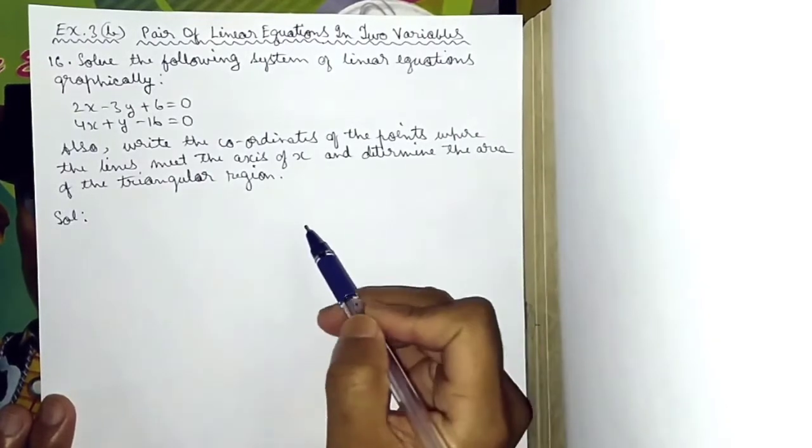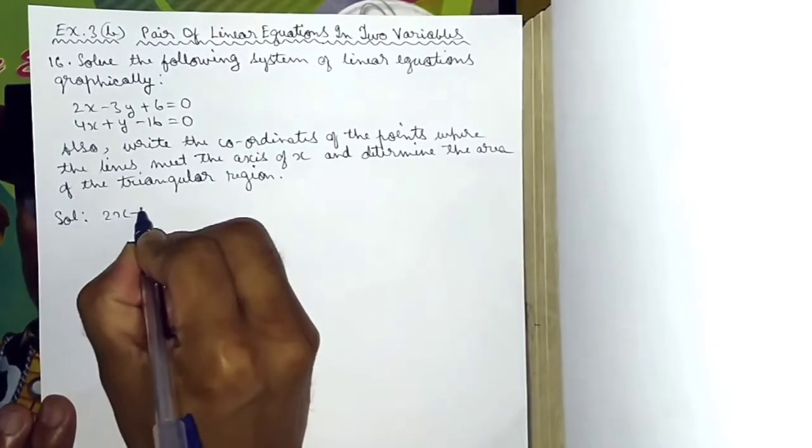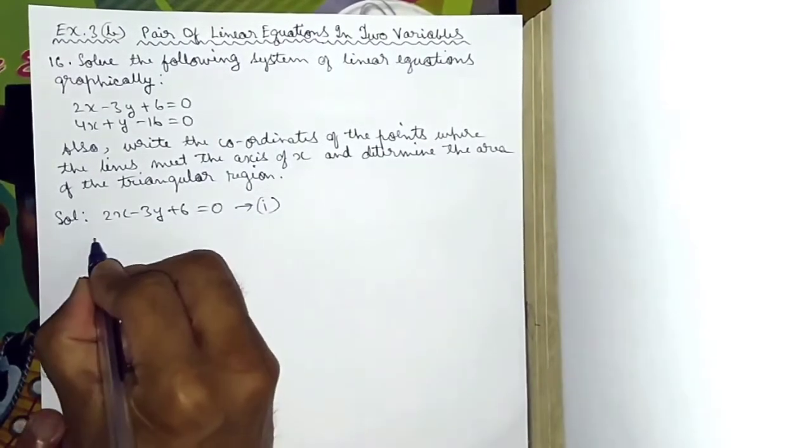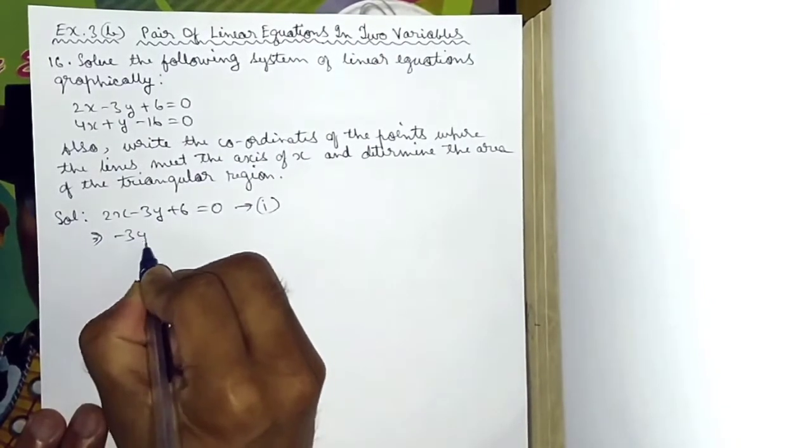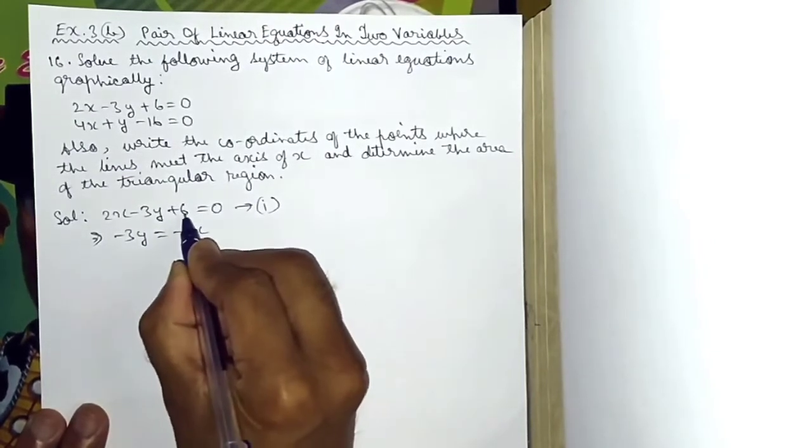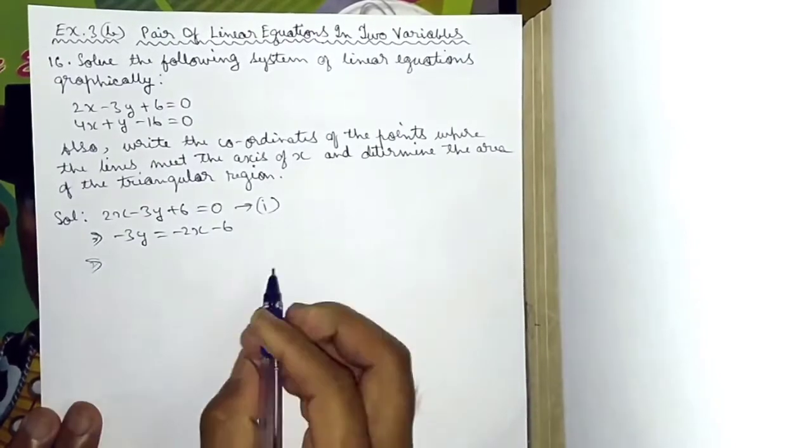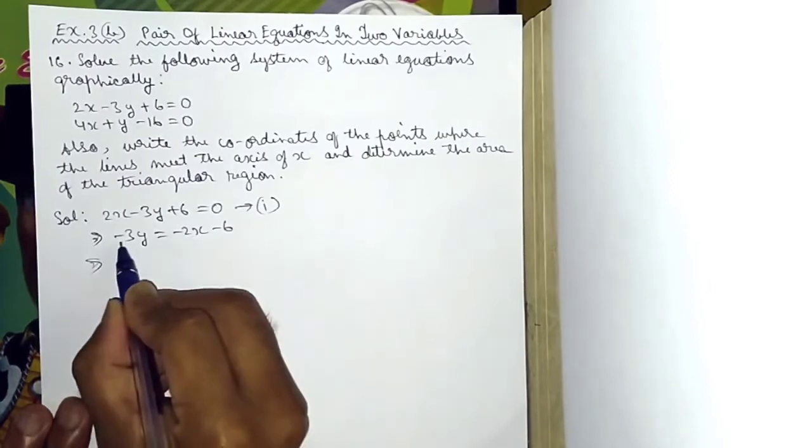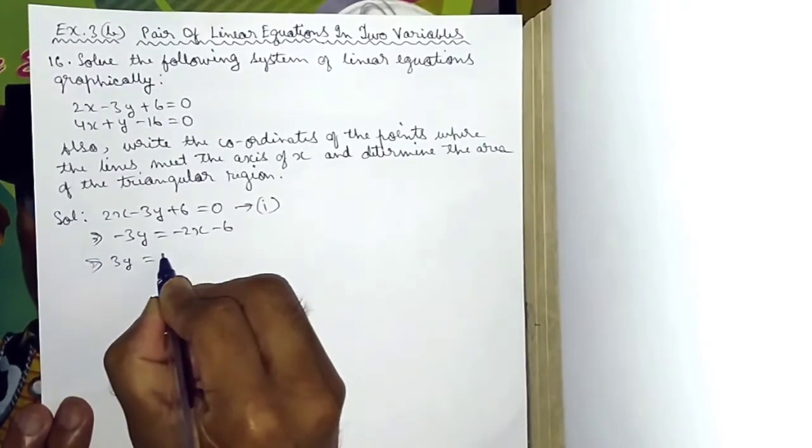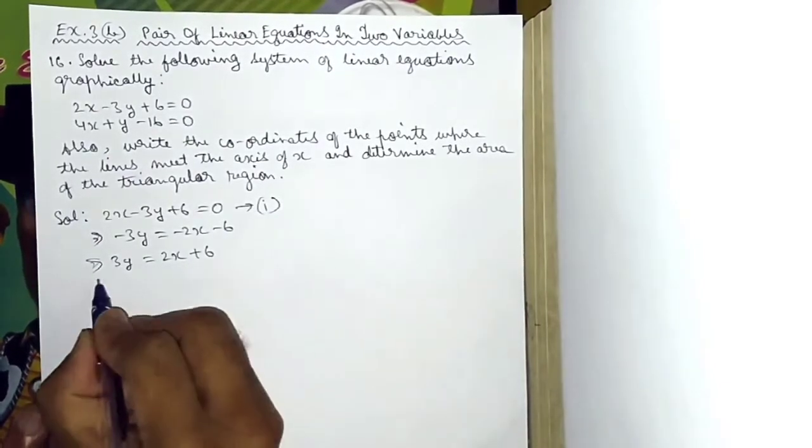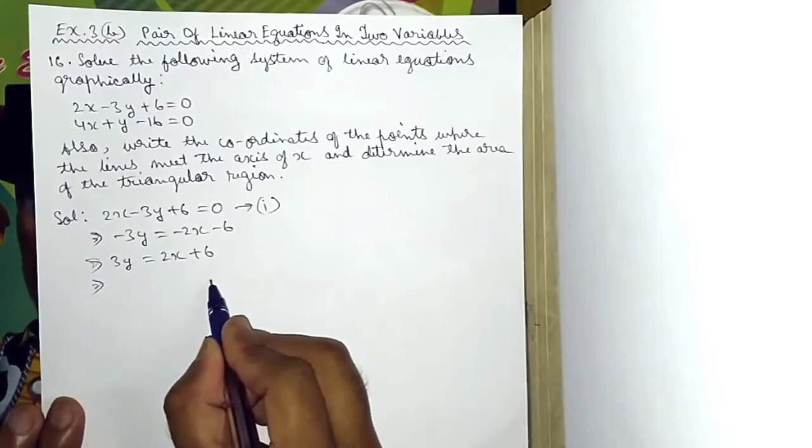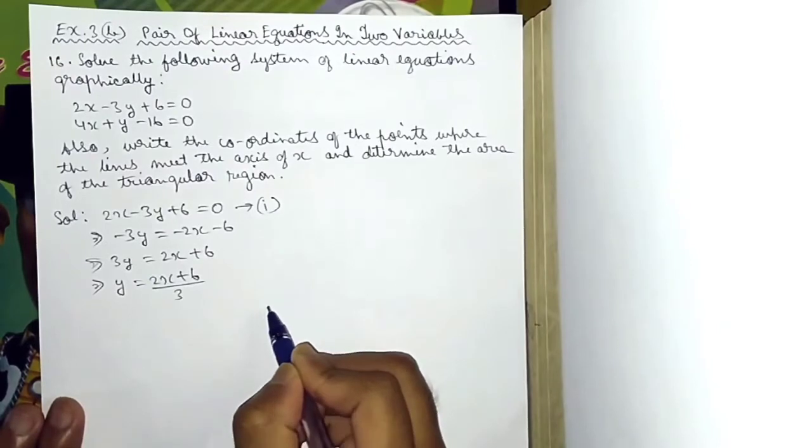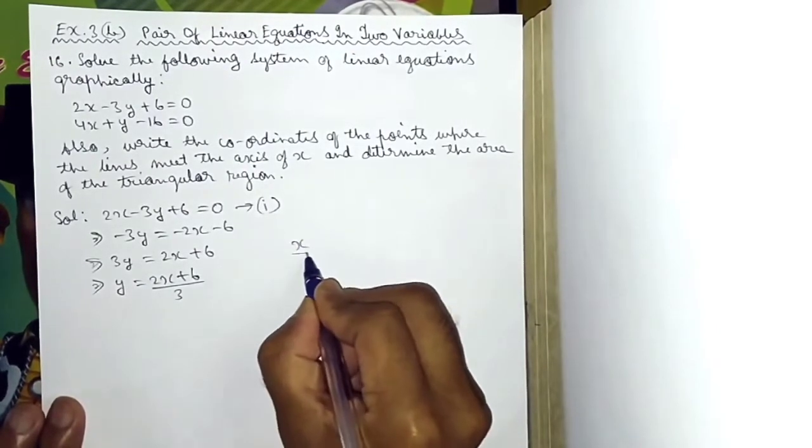The first equation: 2x minus 3y plus 6 equals 0. So this implies minus 3y is equal to minus 2x minus 6. Multiplying both sides by minus 3, we get 3y equals 2x plus 6. This implies y is equal to 2x plus 6 divided by 3. Now create the tabulation: x, y.